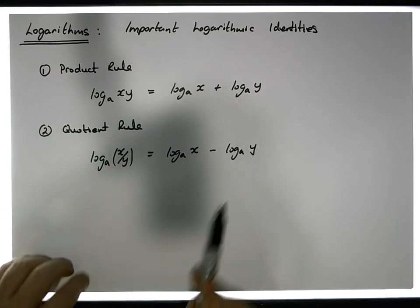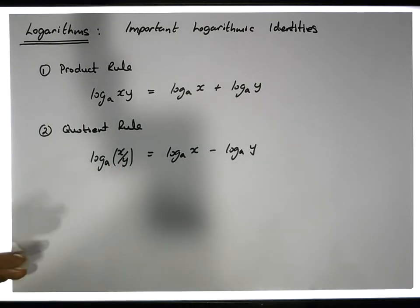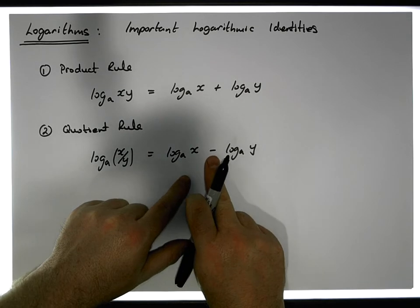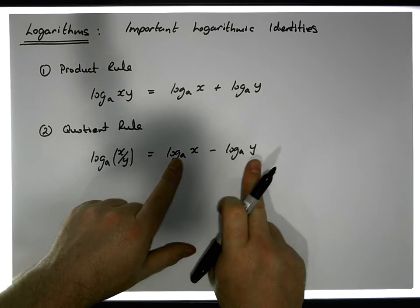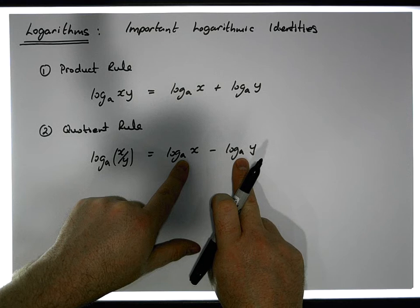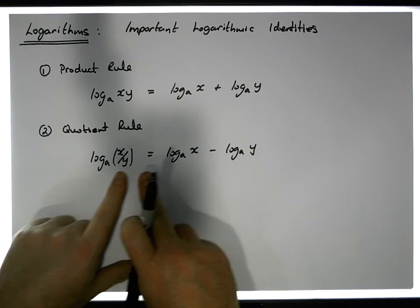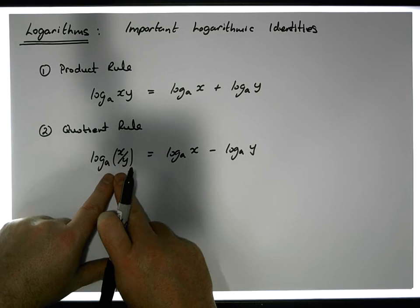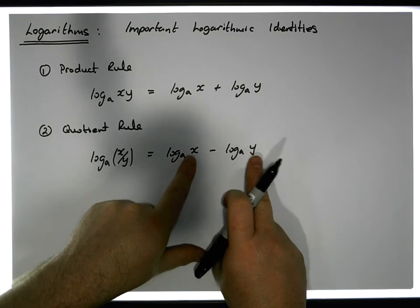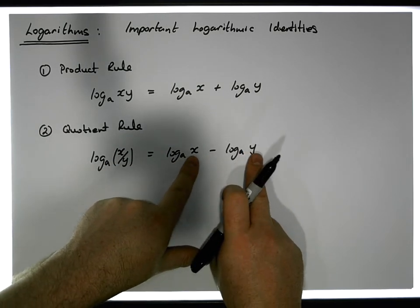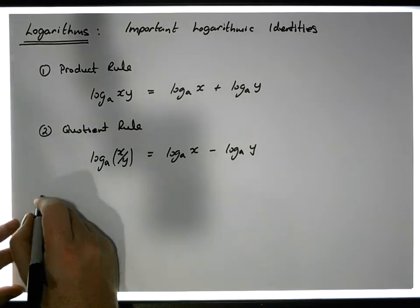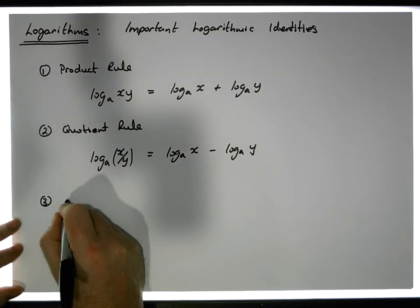So it's saying that the log of a fraction or quotient to a particular base is the same as the log of the numerator minus the log of the denominator, both to the same base. This rule allows us to simplify when we have the difference between two logarithms to the same base — we can join them together — or break a quotient's log into the log of the numerator and the log of the denominator.